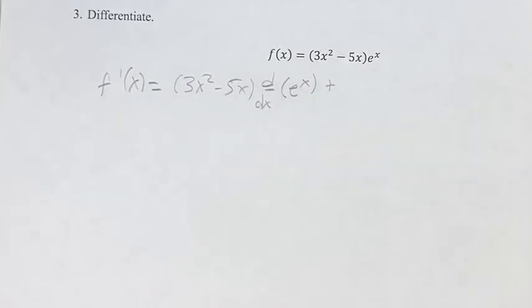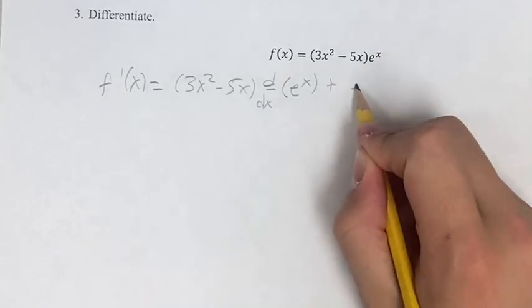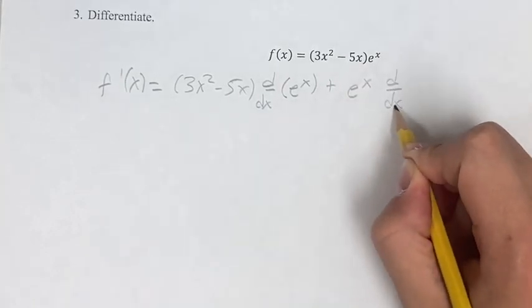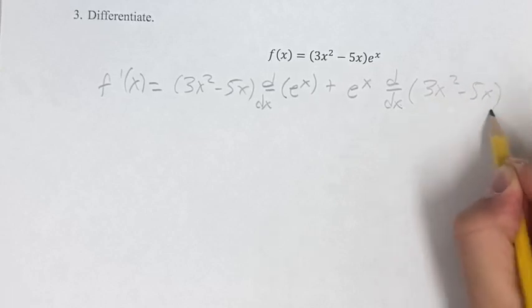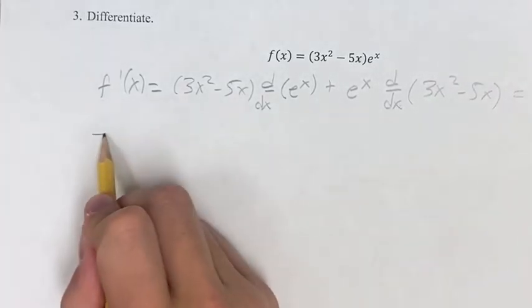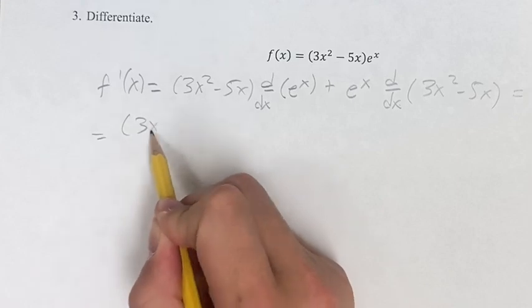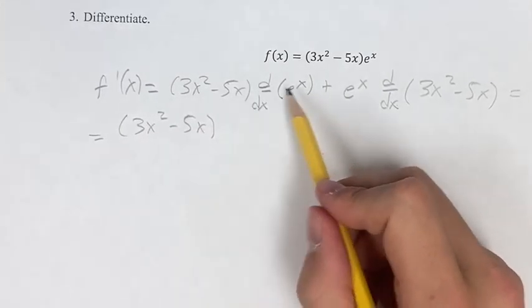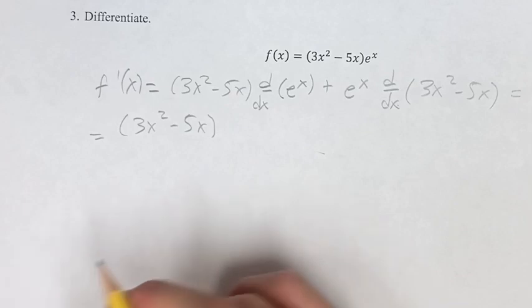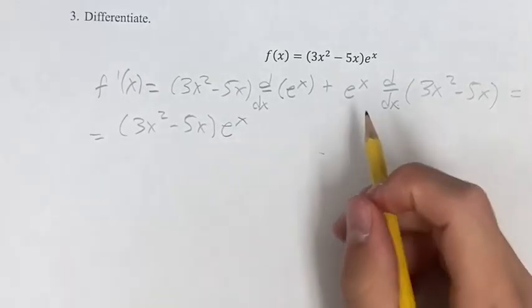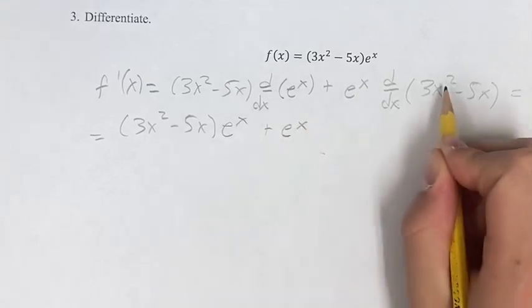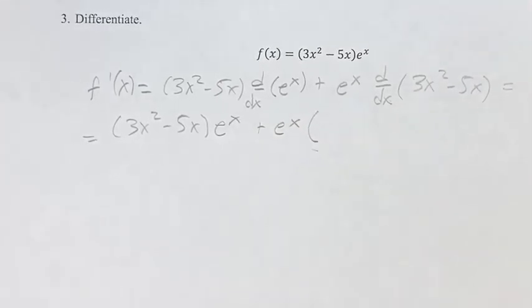And then this is going to be plus the inverse of that, which is e^x times the derivative of the first term, 3x² - 5x. So what does this simplify out to? Well, we have 3x² - 5x times the derivative of e^x. The derivative of e^x is just e^x, always itself, plus e^x times the derivative of this, which we now have to find.